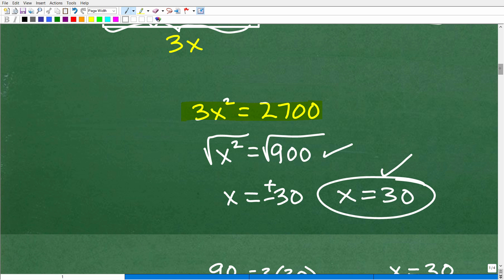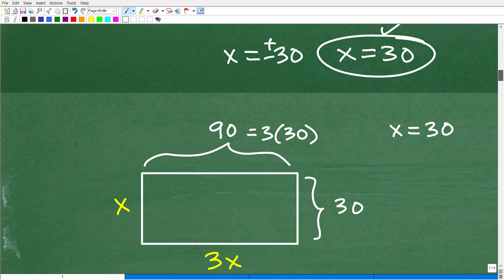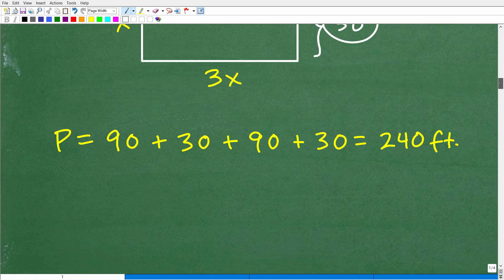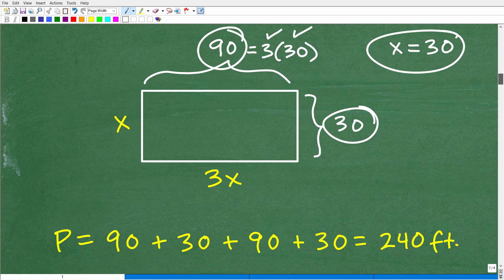So X is equal to 30, but what does that represent? Well, X equal to 30. Remember we let X represent the width of the home. So the width is going to be 30 and the length is going to be three times whatever that width was. So that'd be three times 30, which of course is 90. All right. So now we have the dimensions of this home, this rectangular home. So now we need to bring in this final part.